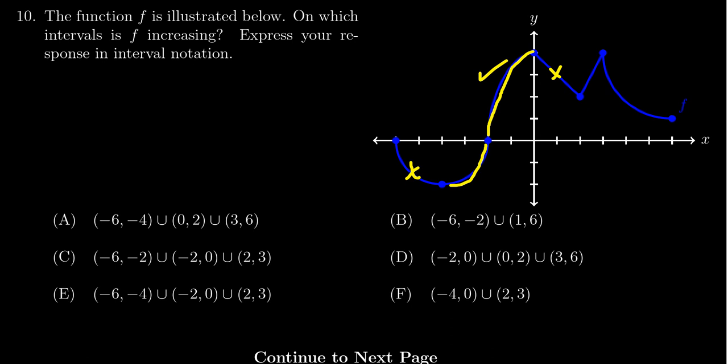From 2 to 3, it was increasing, so we want that section right there. And then from 3 to 6, it's decreasing, we don't want that.